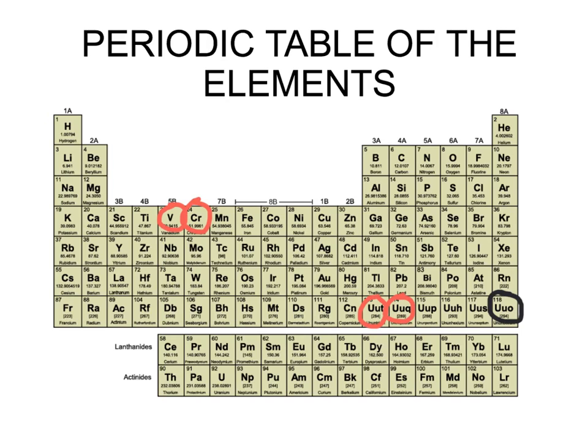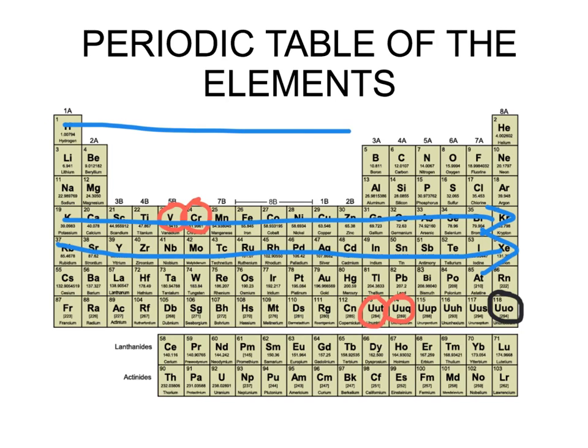You also know that the periodic table is organized in periods, which are these horizontal lines in the periodic table. The first period is composed of two elements. How many periods can you count? Let's see, one, two, three, four, five, six, and seven.